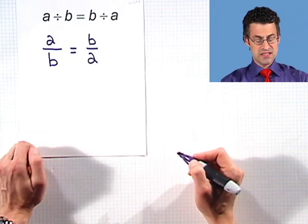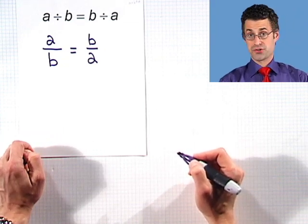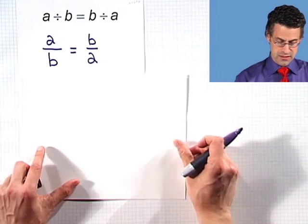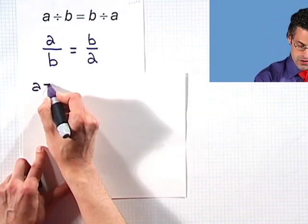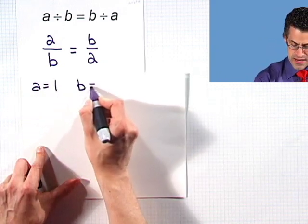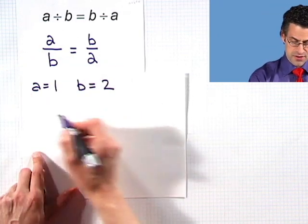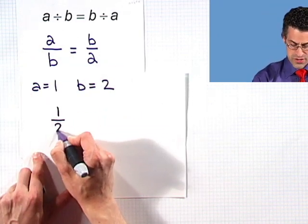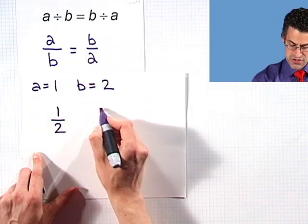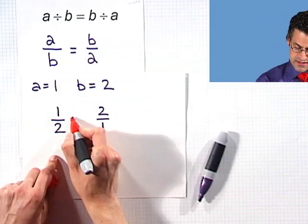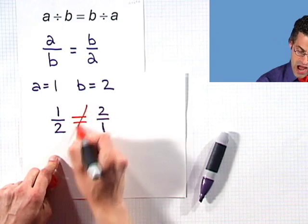It turns out that this is not always true, because I can give a simple example. Let's let A equal 1 and B equal 2. Then this side is going to equal 1 over 2, while this side is actually 2 over 1. And we know that those two things are definitely not equal to each other. So this is definitely not always true.